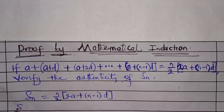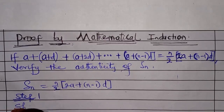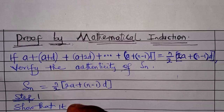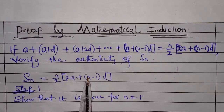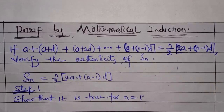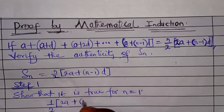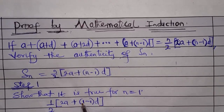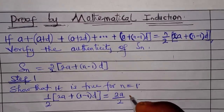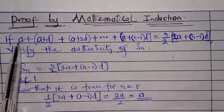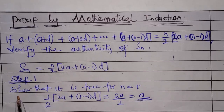Step 1 is to show that it is true for N equal to 1. In place of N on the left-hand side I write 1, so I have 1 over 2 into 2A plus 1 minus 1 times D. Since 1 minus 1 is 0, that term vanishes, leaving 2A over 2, which equals A. The first term of the series is also A, so since both sides are equal, it is true for N equal to 1.